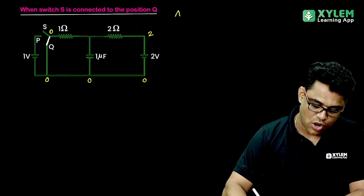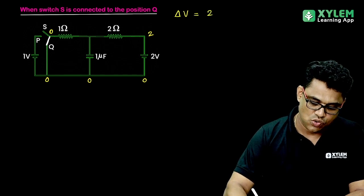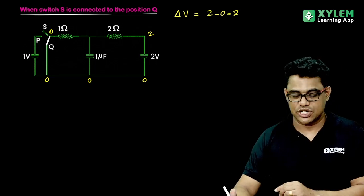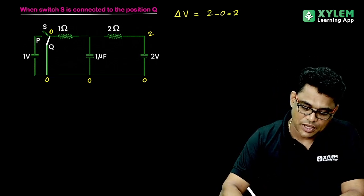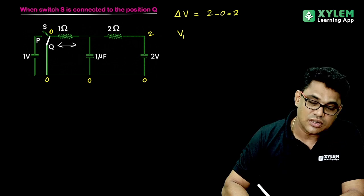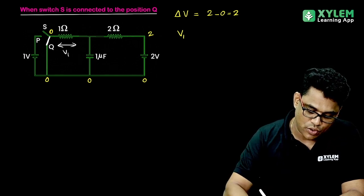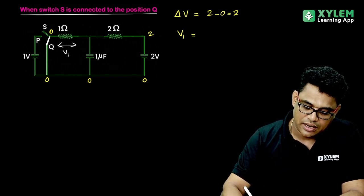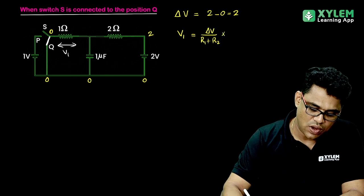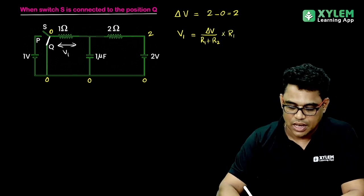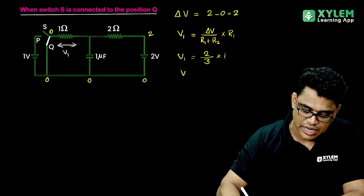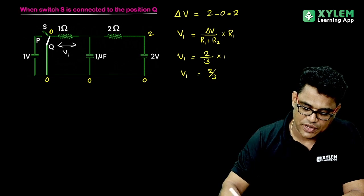Because there is a battery, if the reference node is 0, what is delta V? The potential drop across the combination is 2 minus 0, which equals 2. The potential divides in direct ratio of resistance. V1 equals delta V times R1 divided by (R1 plus R2) = 2/3 × 1 = 2/3 volt.